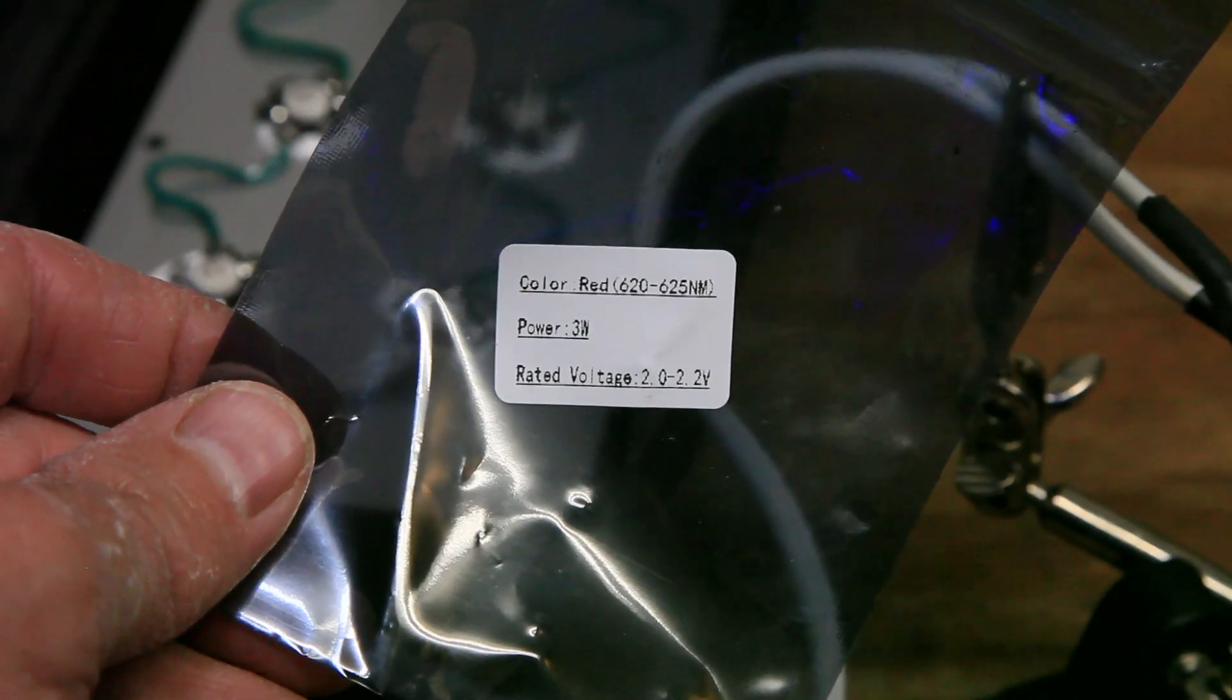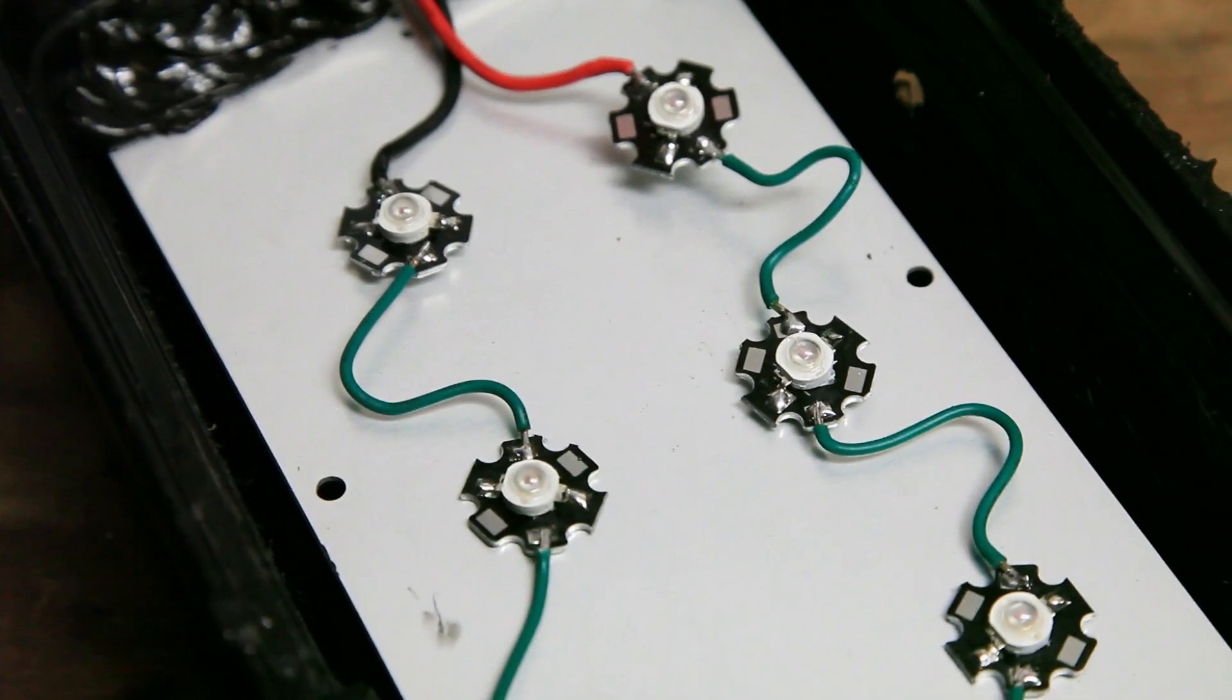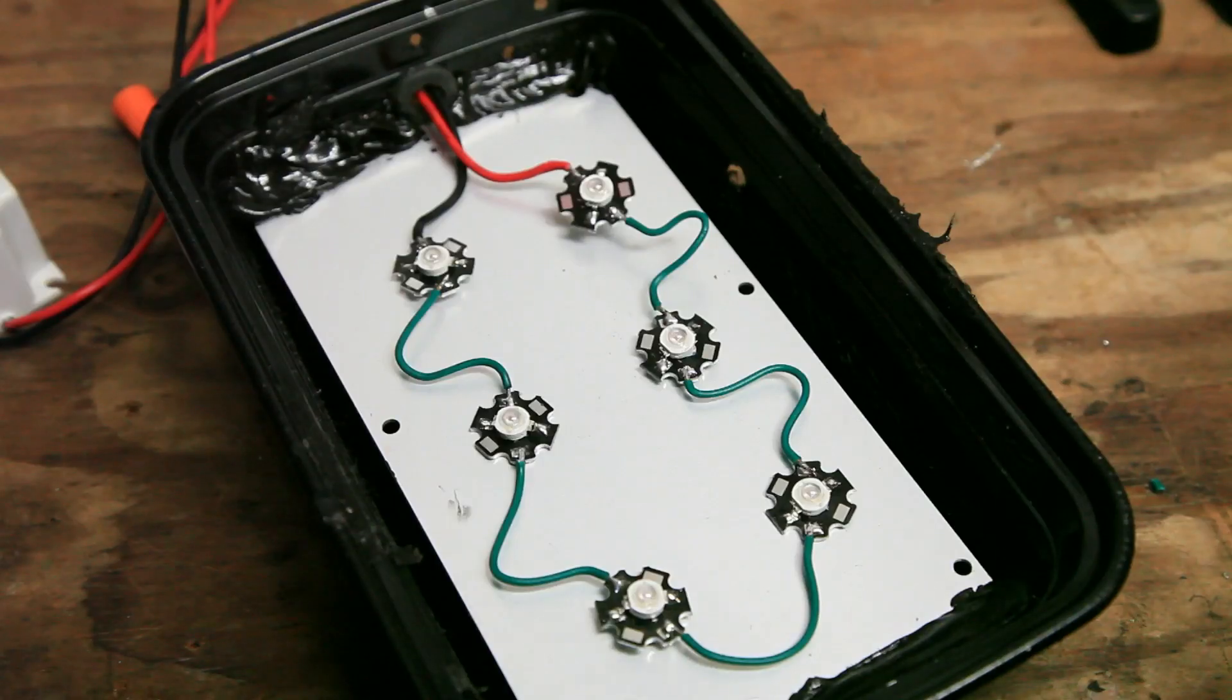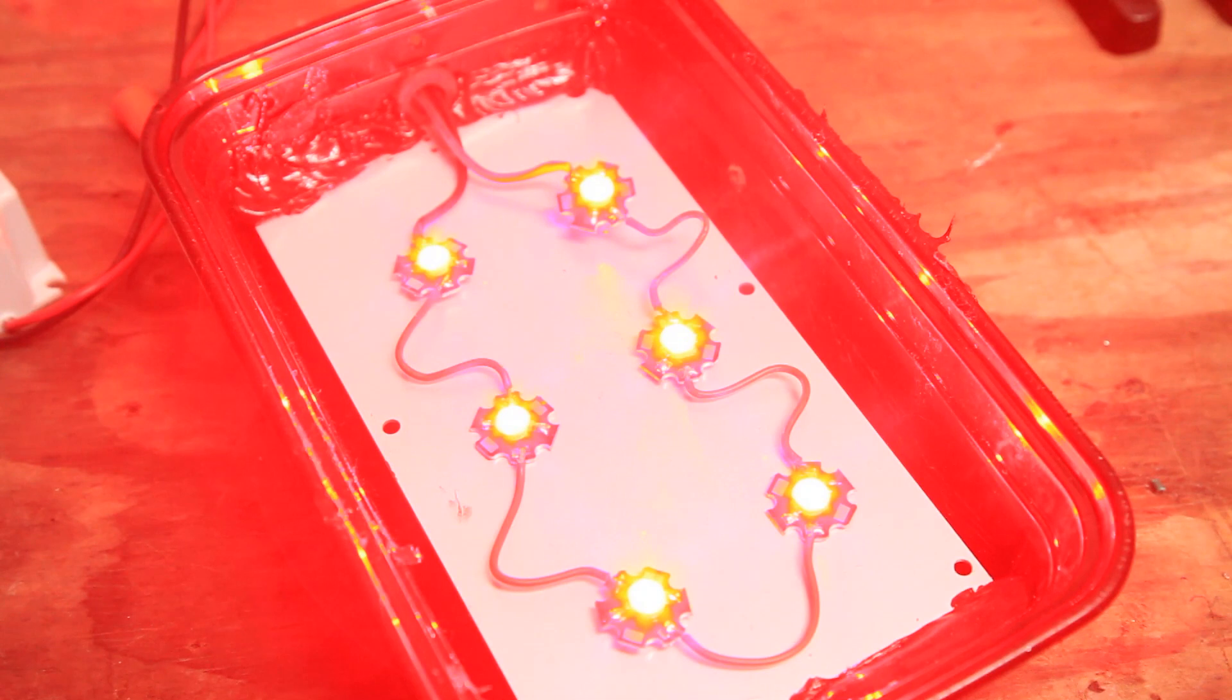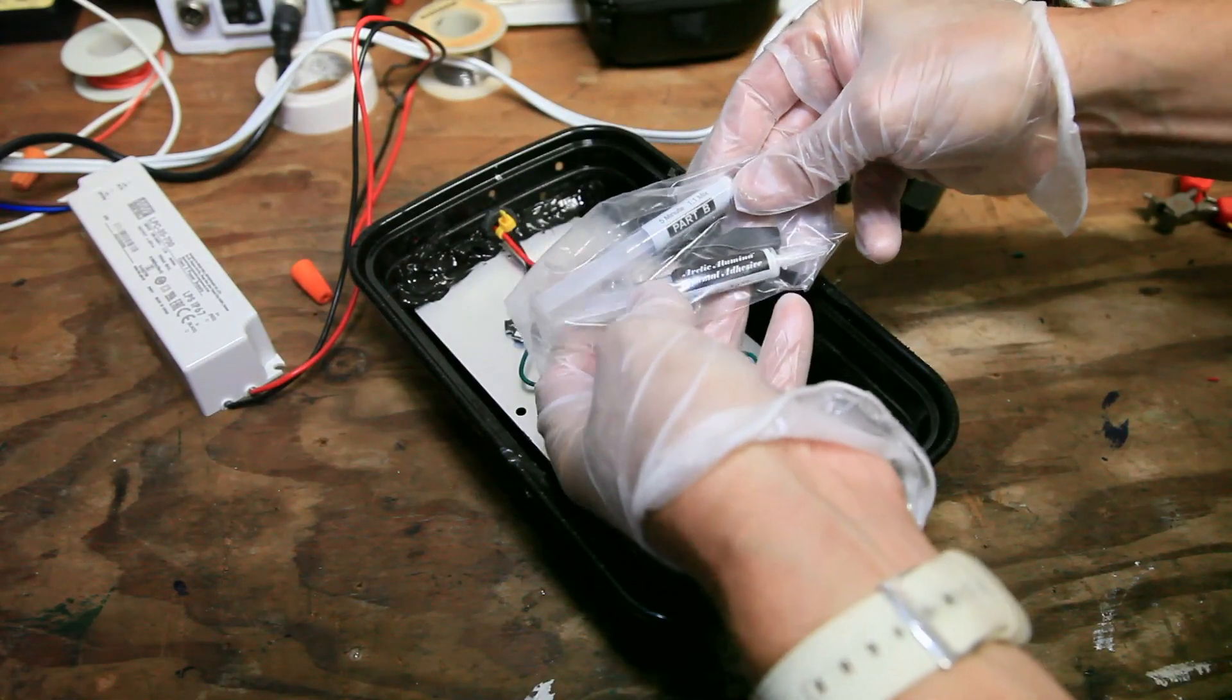I ended up switching from those five 5W LEDs you just saw me soldering to these six 3W LEDs in series. It hit the sweet spot for power, cool running chips, and light spread over the entire heat sink. Which by the way, you could use any type of sheet metal. Both will double as a capable heat sink and reflector.